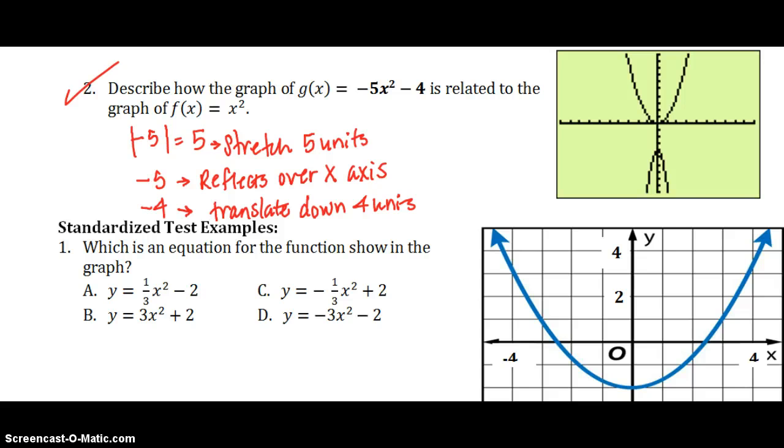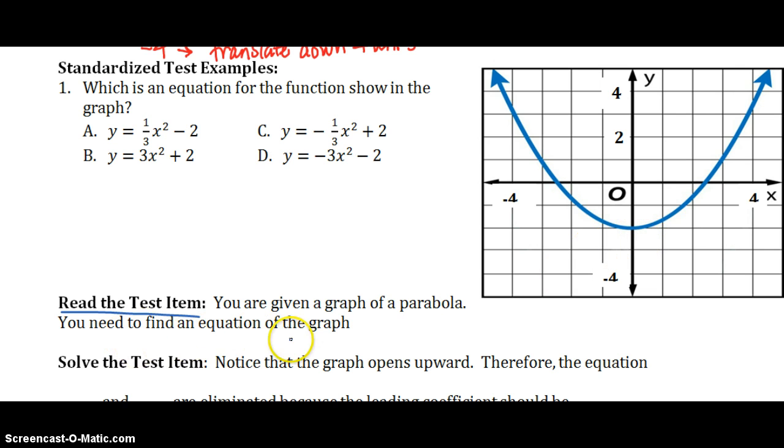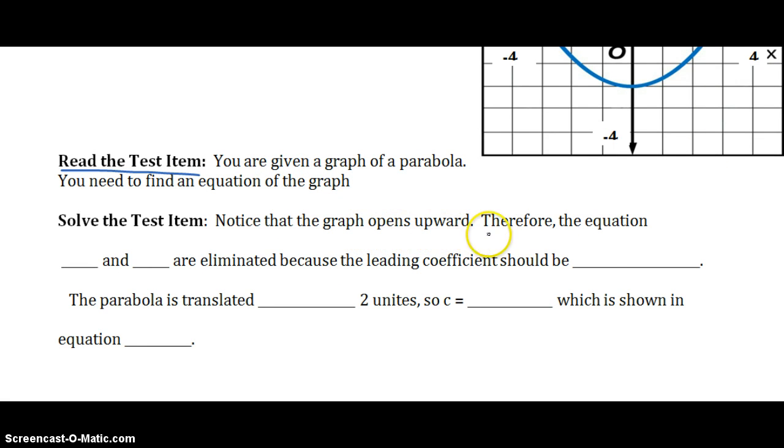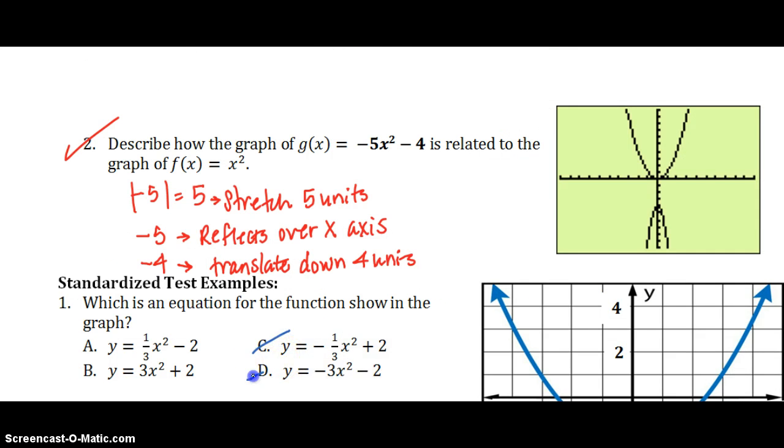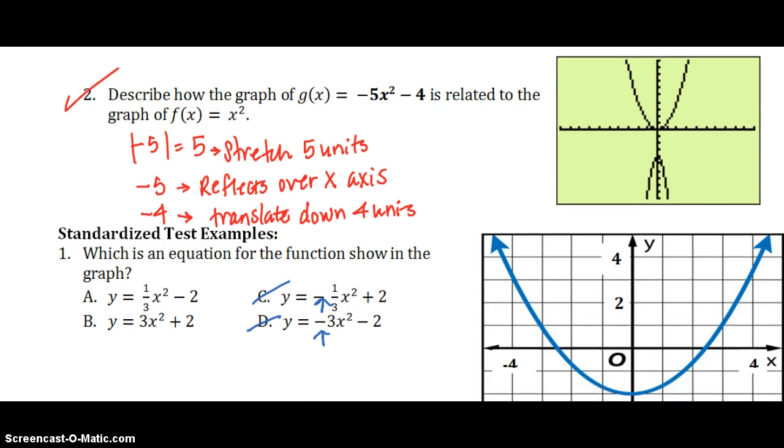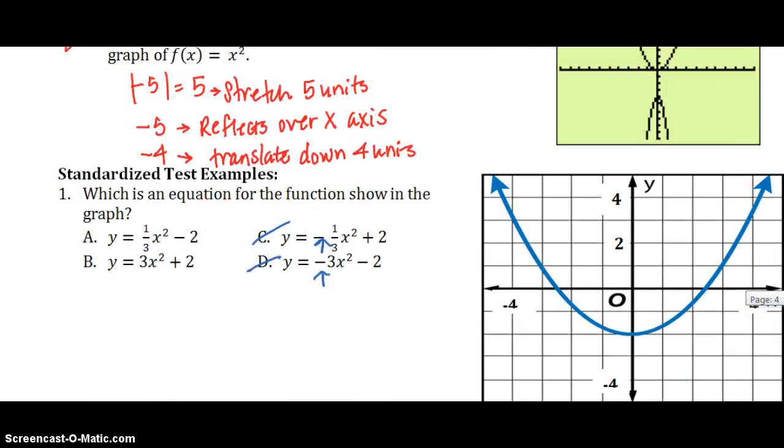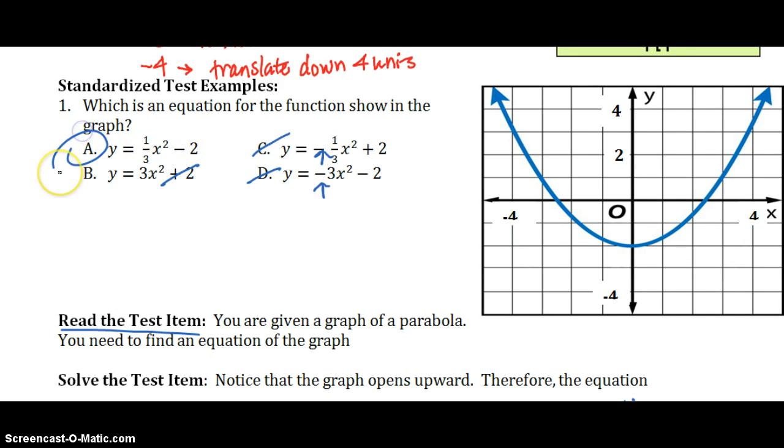Try the standardized test question on your own. I need you to read the test item. You're given this parabola. And you need to find the equation of the graph. Let me talk you through it. Here are step-by-step the way to think about it. Notice that the graph opens up. Therefore, the equation for c and d are eliminated. We know that it's not going to be c and it's not going to be d because of those negative signs. How do we fill that blank in? It says the leading coefficient should be positive because our graph is opening up. The parabola is translated down. So that tells me that the c value, since it's translated down 2 units, the c value should be negative 2. Therefore, the only possible equation is choice A because A has the negative 2. So we eliminate B because of this positive 2. So A is the correct answer.